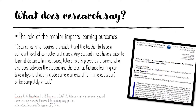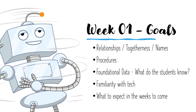What does research say about the distance learning model? One particular article noted the role of the mentor and how it significantly impacts learning outcomes. The presence of a well-equipped adult inside the home significantly impacts a child's access to material. If a child doesn't know how to perform a task, that could be a two-, four-, or six-hour delay — or even a two-, four-, or six-day delay — depending on when that question is answered. Recognize that the presence or absence of a mentor, which could simply be a parent or a sibling, will impact learning outcomes.